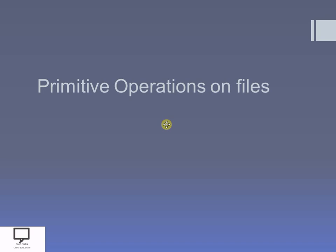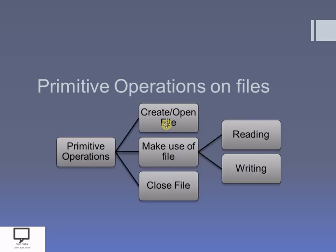Now let's start with the primitive operations on a file. Which are the primitive operations we can perform? First of all, creation or opening of a file. After opening a file, we use it by performing reading and writing operations. After that, we close the file. So opening, reading, writing, and closing a file are the basic primitive operations.